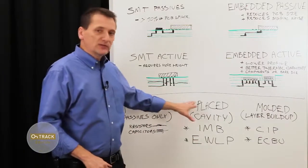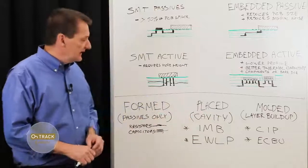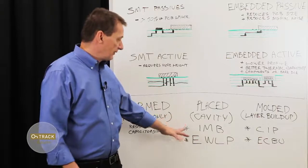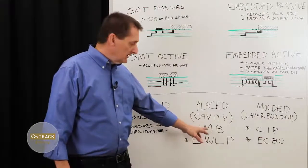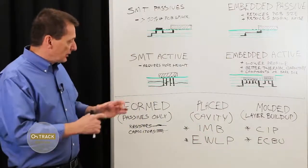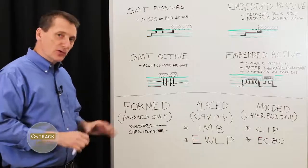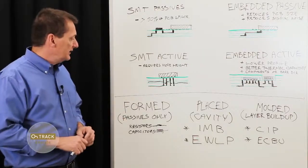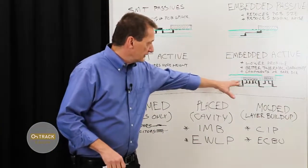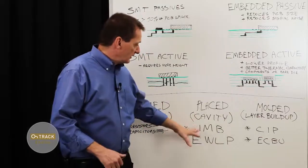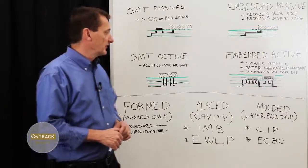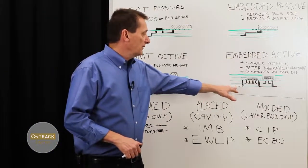The next type is referred to as placed, and placed embedded components will sit in a cavity. And the two general techniques, there are others, are referred to as IMB, which stands for integrated module board. And that's where we can place the components in a milled out or laser drilled out cavity within a board layer and connect through using different via techniques. Typically when doing this, it's considered high density interconnect, and you'll most likely be using blind or buried or micro vias.